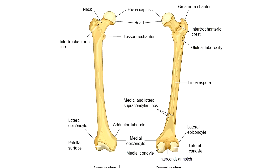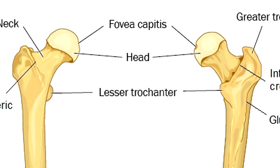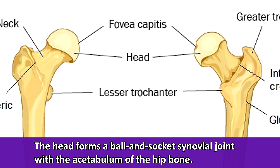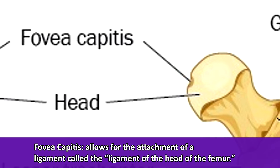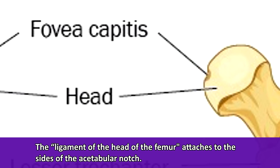So let's take a look at the femur bone. First, we have this large ball-like structure on the superior portion of the femur, which is called the head. It has this ball shape because it's going to form a ball and socket synovial joint with the acetabulum of the hip bone. Next, you'll notice this tiny pit on the head of the femur called the fovea capitis, and this allows for the attachment of the ligament of the head of the femur, which attaches to the sides of the acetabular notch.